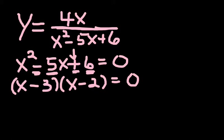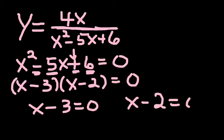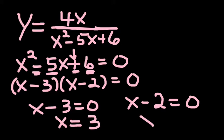So there are my two factors. And in order to get solutions, I simply set each factor equal to zero. X minus 3 equals zero, and x minus 2 equals zero. And when I move the 3 over, it becomes positive. So x equals 3. And when I move this negative 2 over, it becomes positive, and x is equal to 2. So my two vertical asymptotes will occur in this equation at x equals 3 and x equals 2.